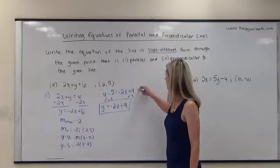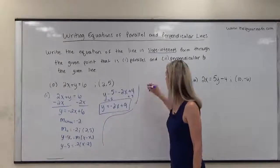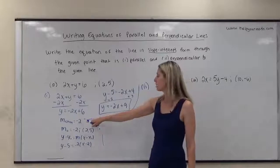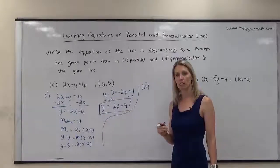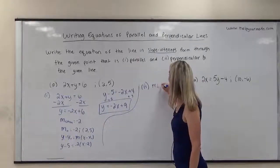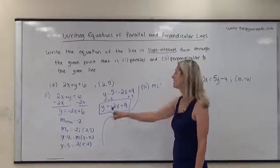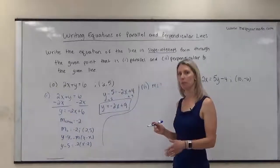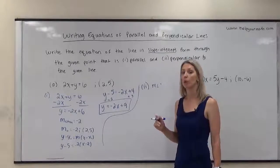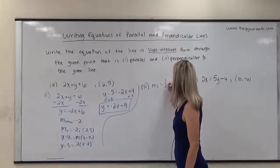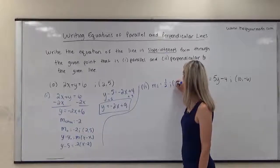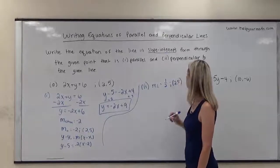Next, we want to write the equation of the perpendicular line. The slope of the given line was negative 2. The slope of any line perpendicular to it is the negative reciprocal. Since the given slope is negative, the perpendicular slope becomes positive, and the reciprocal of 2 is one-half. So the slope of the perpendicular line is 1/2, and we're using the point (2, 5).